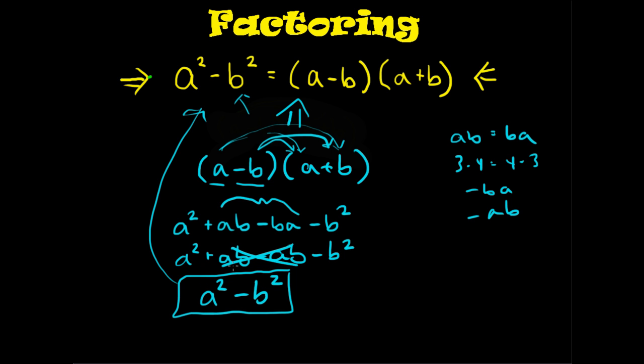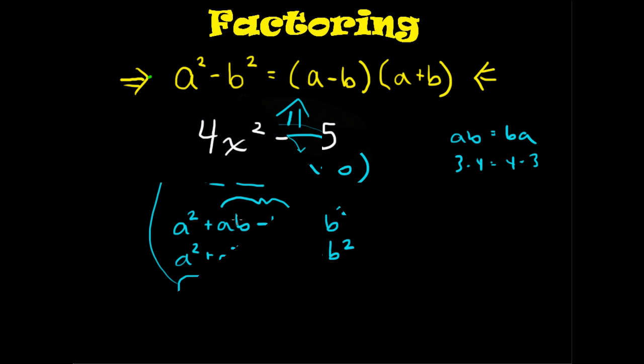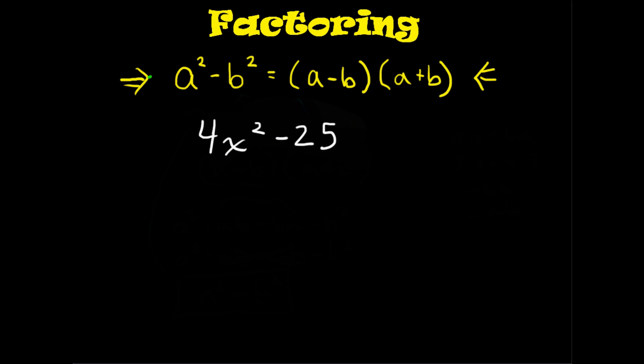So now we're going to talk about how we can use the difference of two squares to help us in factoring. Here's the first problem we will try. It's 4x squared minus 25.